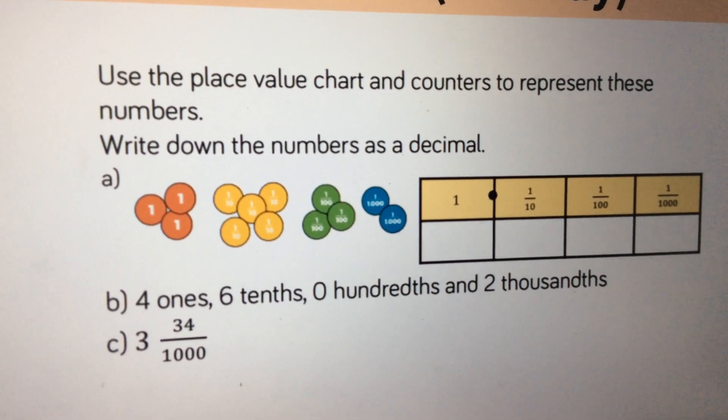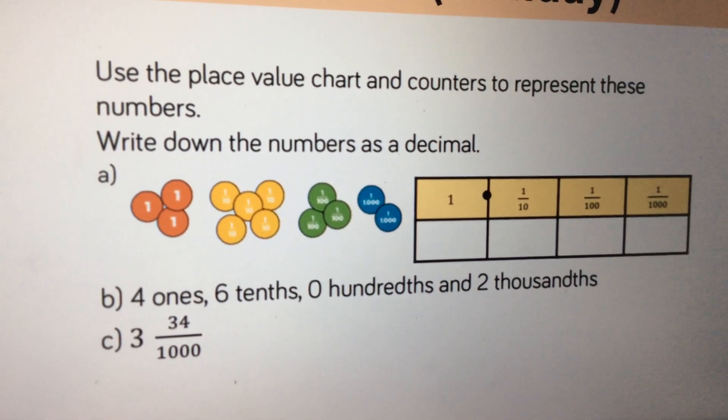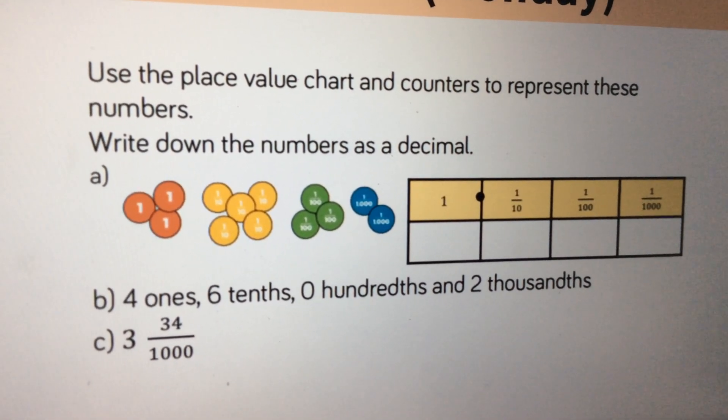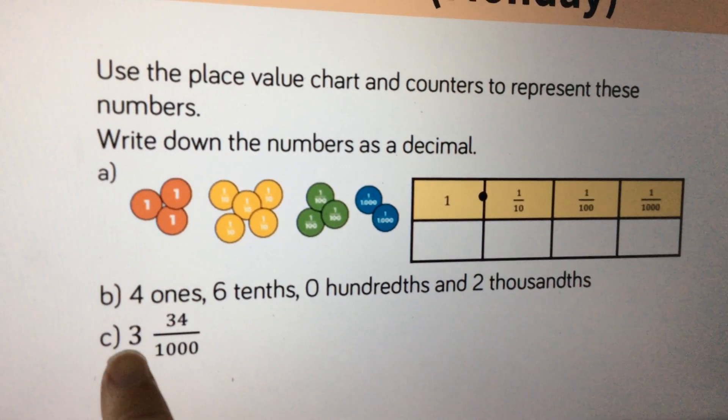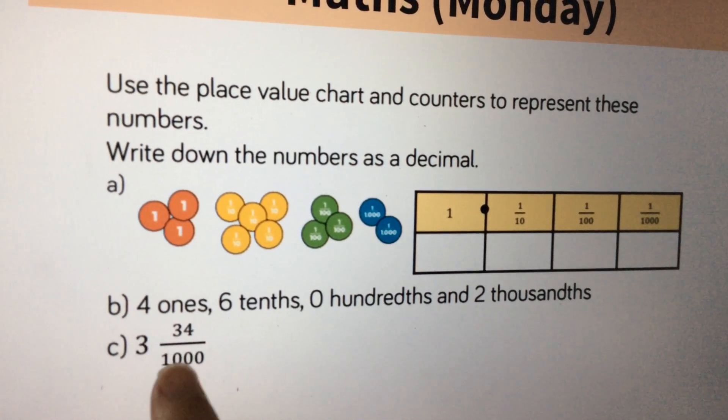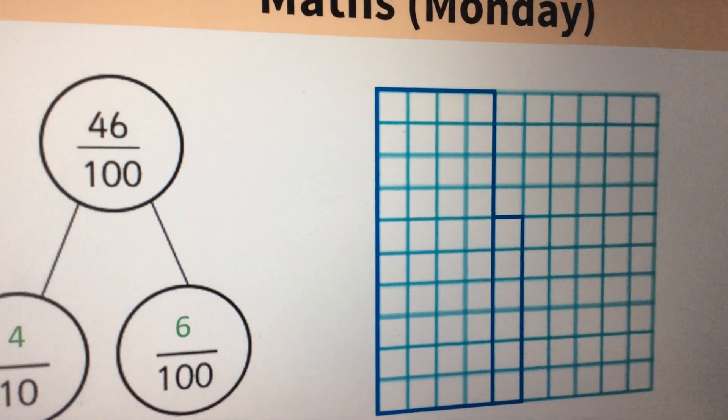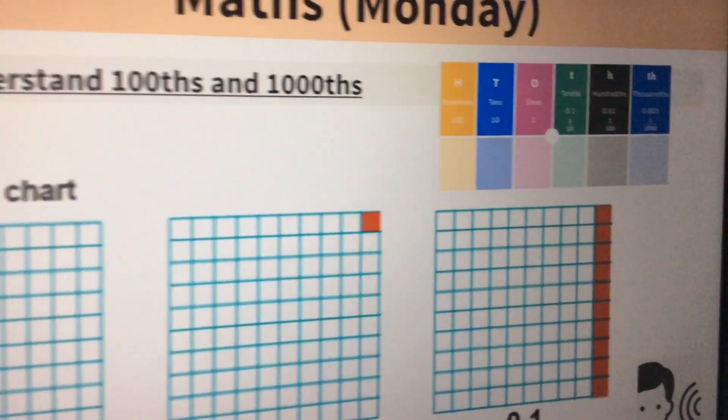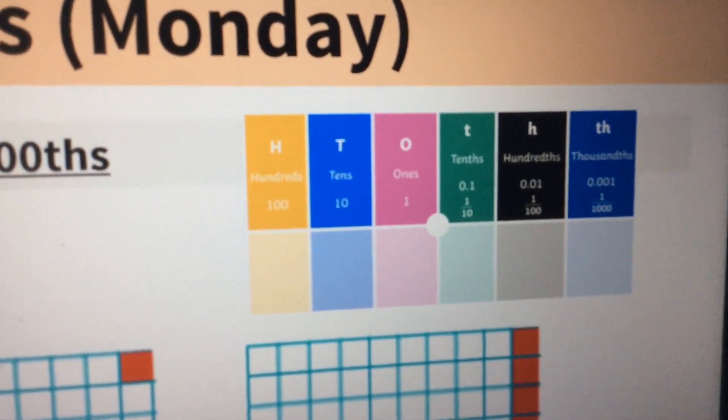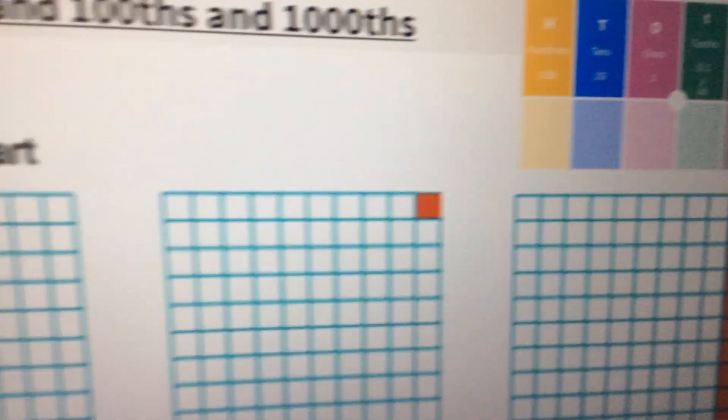If you need to look back, look back on that place value grid. The second one is four ones, six-tenths, zero-hundredths and two-thousandths. And then you've got three for this one. This is, that's your three. That's a whole number. And then thirty-four thousandths. So B, that's a bit trickier. Have a think about that one. I would go back and look at this again. Have that open in front of you. That will really help you too with those ones.